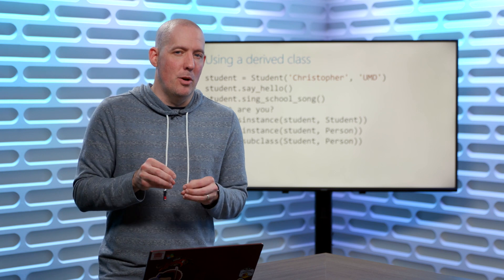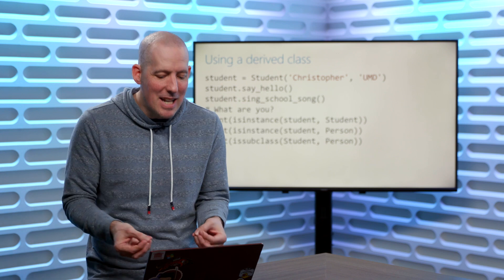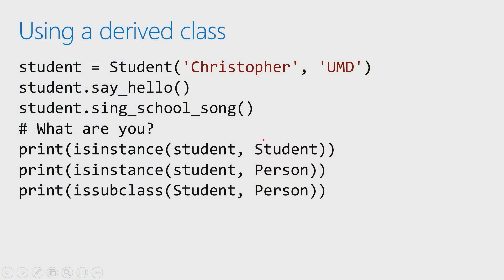The other thing you're going to notice with classes is I can do a 'what are you?' check. I can say, is this an instance of a given class? So here's that variable — I can say, are you a student? Well, we know that it is, so it's going to return true. You're also going to notice that we can say, are you a person? With inheritance, we're creating an is-a relationship. Student is a person, so this is actually going to return true as well.